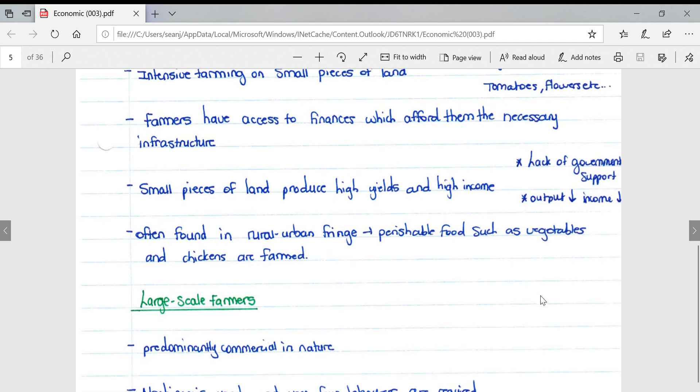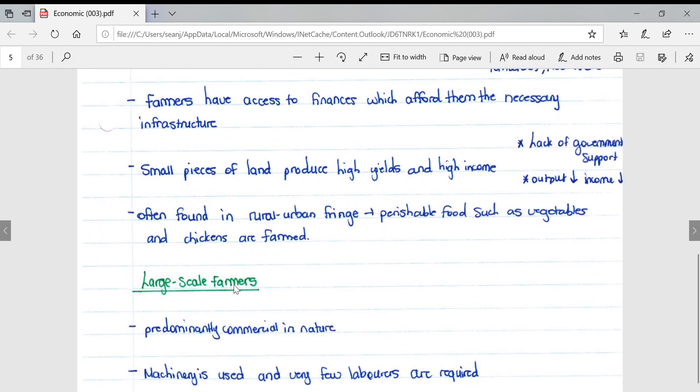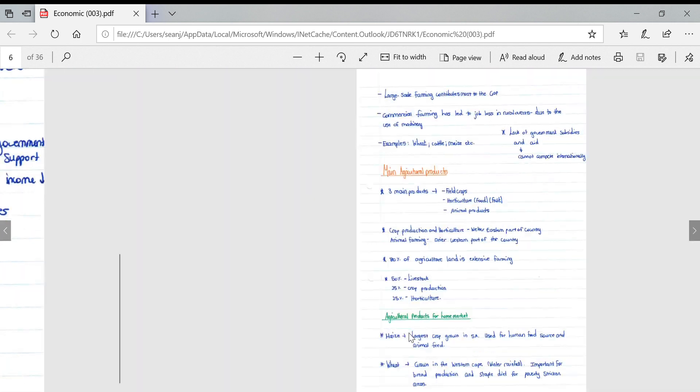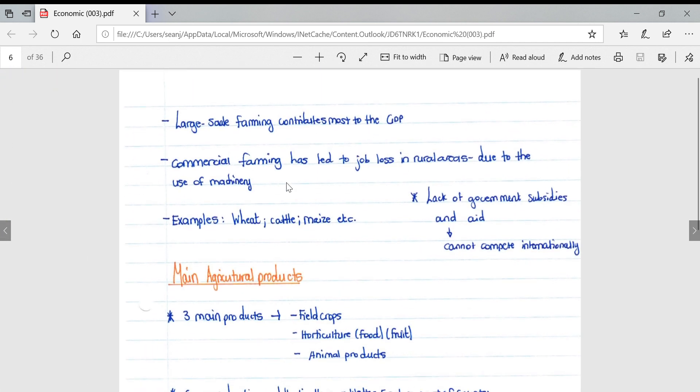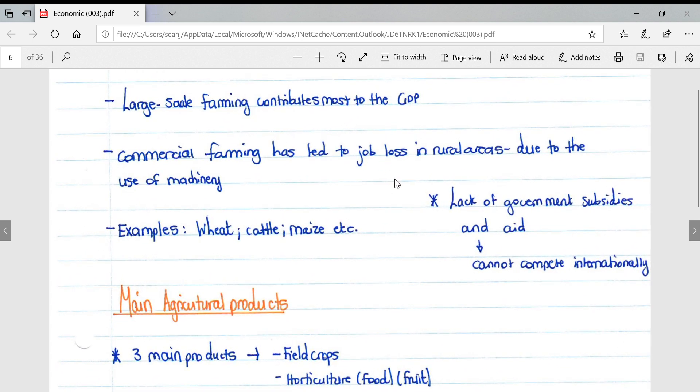Large-scale farmers are predominantly commercial in nature. Machinery is used and very few laborers are required. Large-scale farming contributes most to the GDP. Commercial farming has led to job loss in rural areas due to the use of machinery. Examples include wheat farming, cattle, and maize farming. Lack of government subsidies means South Africa cannot compete internationally.